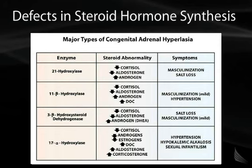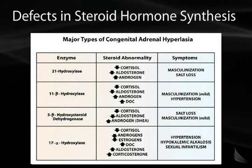With 11-beta hydroxylase deficiency, there is also low cortisol and low aldosterone, but these patients do not have salt wasting because of the accumulation of another mineralocorticoid called DOC, or deoxycorticosterone. DOC is actually a more potent mineralocorticoid than aldosterone, so these patients will have hypertension. Because of increased androgen production, mild masculinization can also occur. With 3-beta HSD deficiency, there is again low cortisol, low aldosterone, and a shift to the androgen pathway, leading to mild ambiguous genitalia and mild salt wasting in female infants.